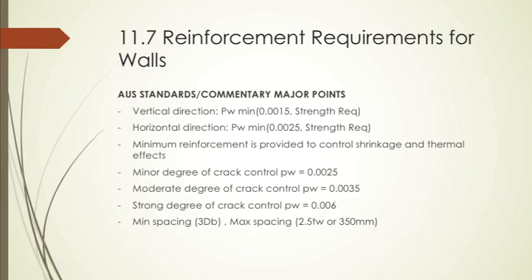In section 11.7, we have the reinforcement requirements for walls. Looking at the standards and the commentary, the major points are for the vertical direction, the vertical reinforcement we need a minimum of 1.5% of the cross-sectional area of the wall as reinforcement, and the horizontal direction we need a minimum reinforcement ratio of 2.5%.